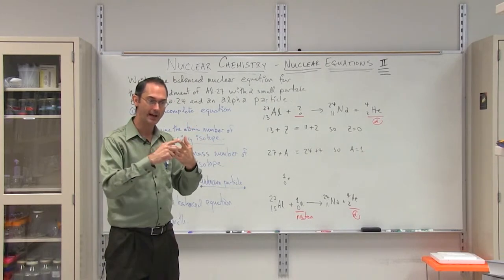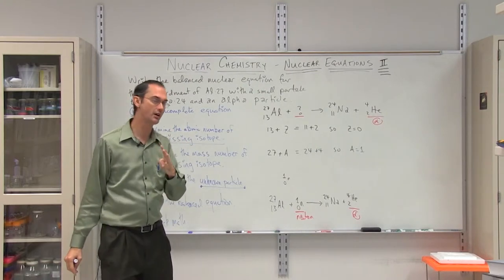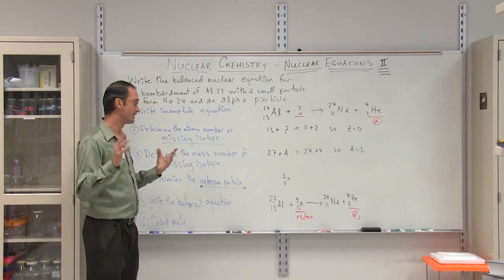So you might want to think, alpha, beta, gamma, positron, which one of those doesn't have a charge? That's where my mind's headed.